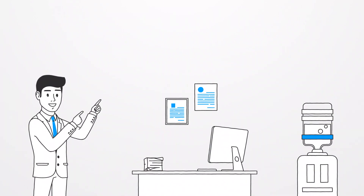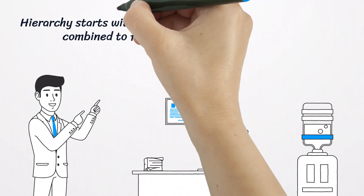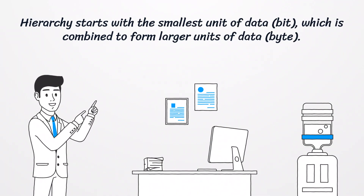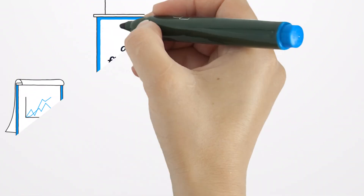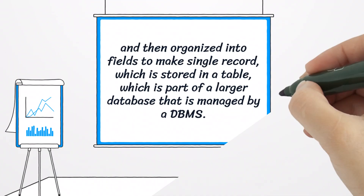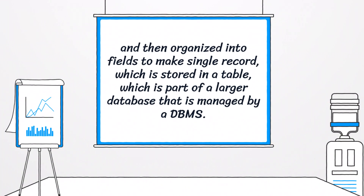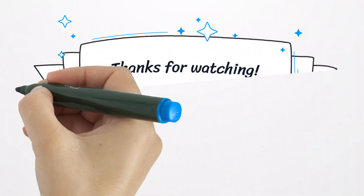The hierarchy starts with the smallest unit of data, bit, which is combined to form larger units of data, byte, and then organized into fields to make a single record, which is stored in a table, which is part of a larger database that is managed by a DBMS. Thanks for watching.